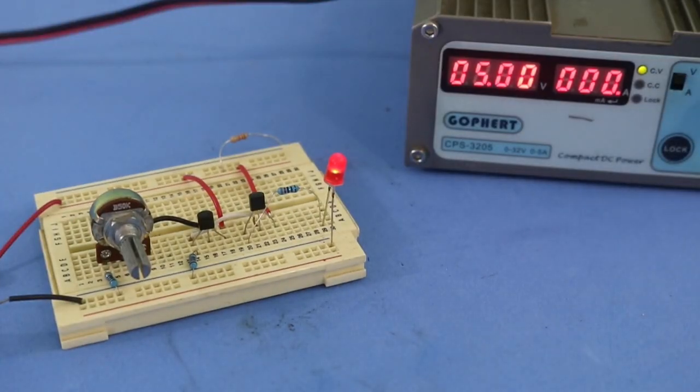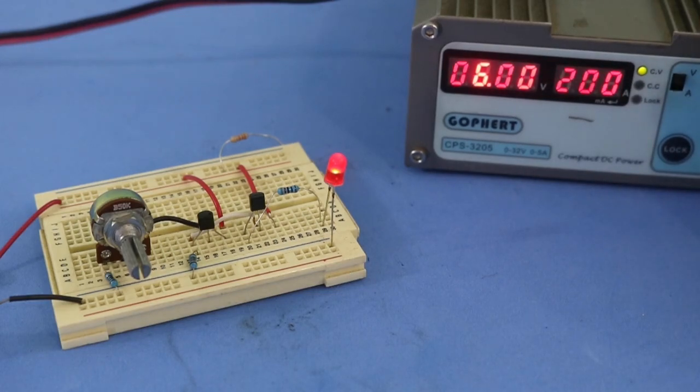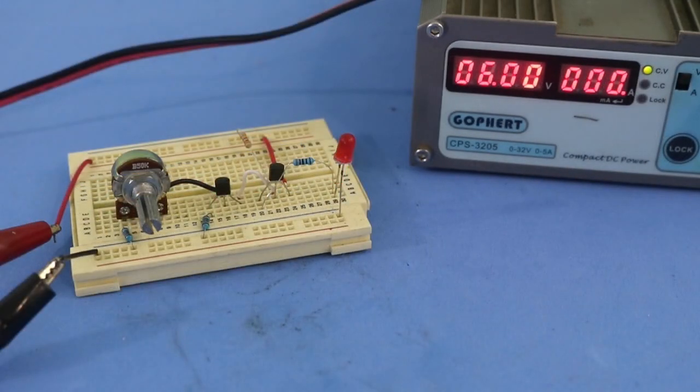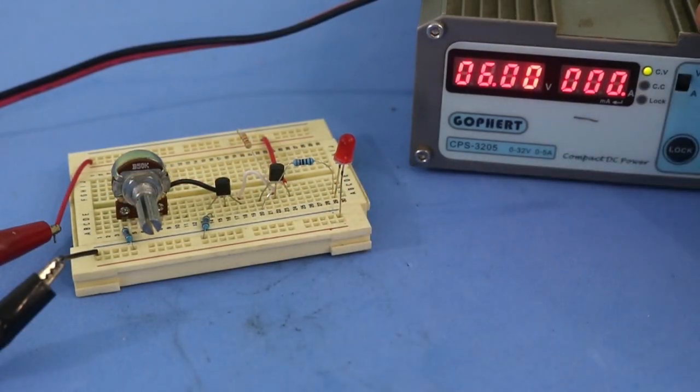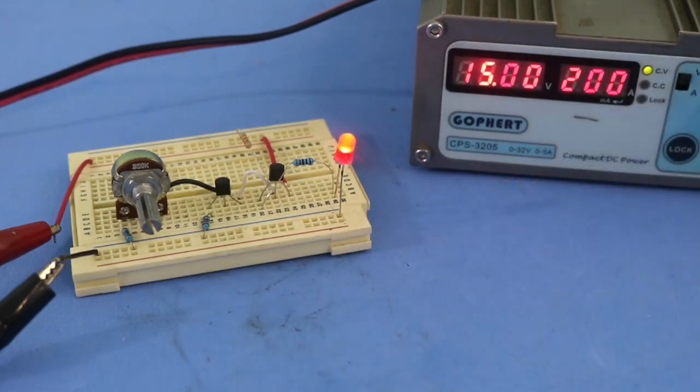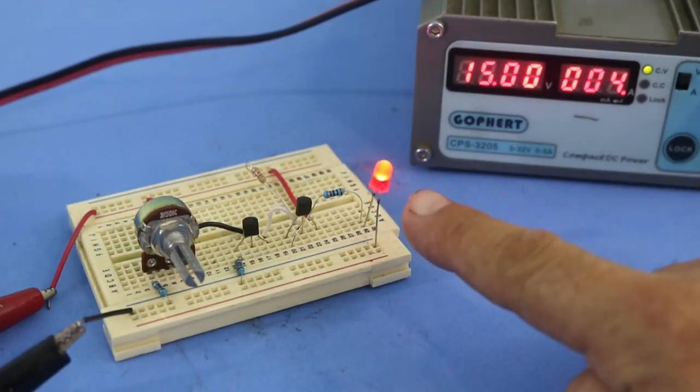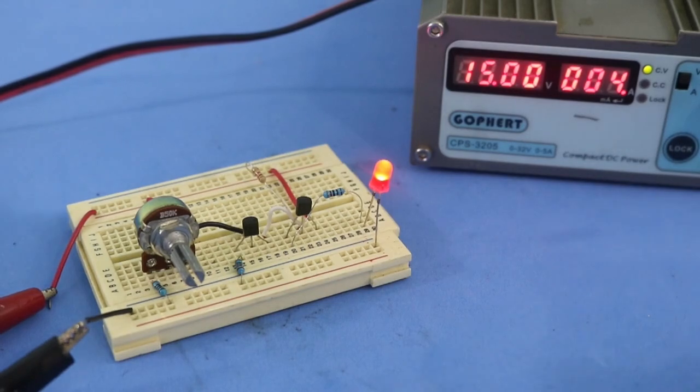One version of the circuit keeps the LED on until the voltage reaches a certain point and then goes off. The other version keeps the LED off until the voltage reaches the preset point and then goes on. The voltage at which the LED goes on or off can be adjusted using the potentiometer.